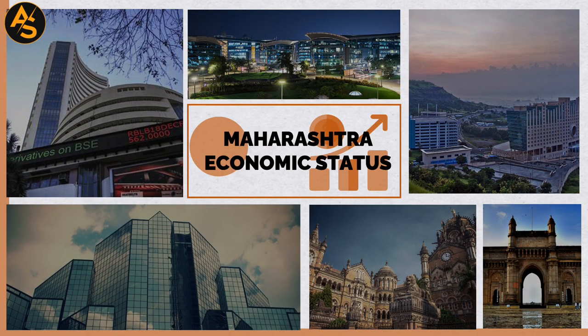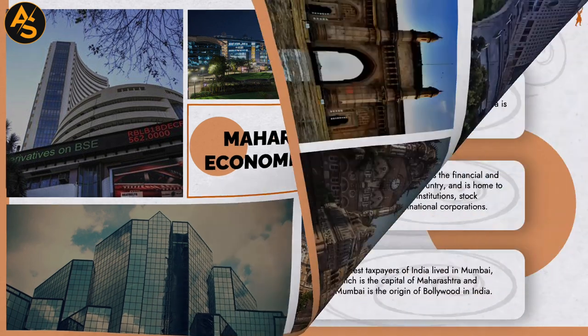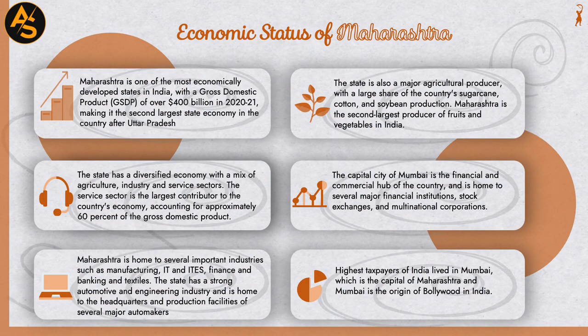Economic Status of Maharashtra. Maharashtra is one of the most economically developed states in India, with a Gross State Domestic Product of over 400 billion dollars in 2020-21, making it the second largest state economy in the country after Uttar Pradesh. The state has a diversified economy with a mix of agriculture, industry, and service sectors. The service sector is the largest contributor, accounting for approximately 60 percent of the GSDP. Maharashtra is home to several important industries such as manufacturing, IT and ITES, finance and banking, and textiles.